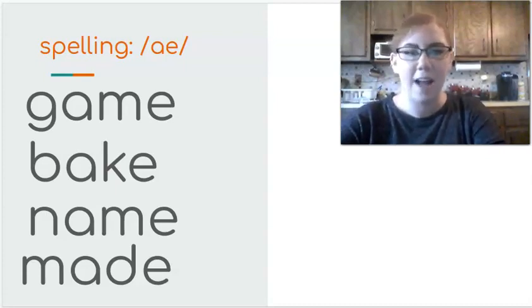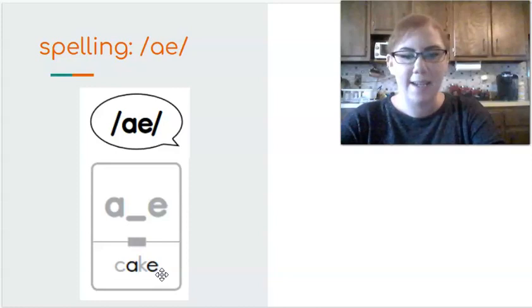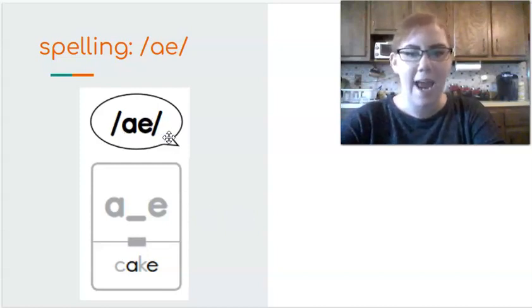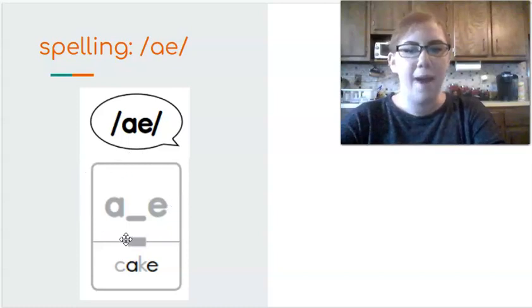Let's look at our vowel code card because we said this was a vowel team. Cake. The power bar is shorter. That means it's not very common for A to be spelled like this. But right now that's what we're going to focus on.